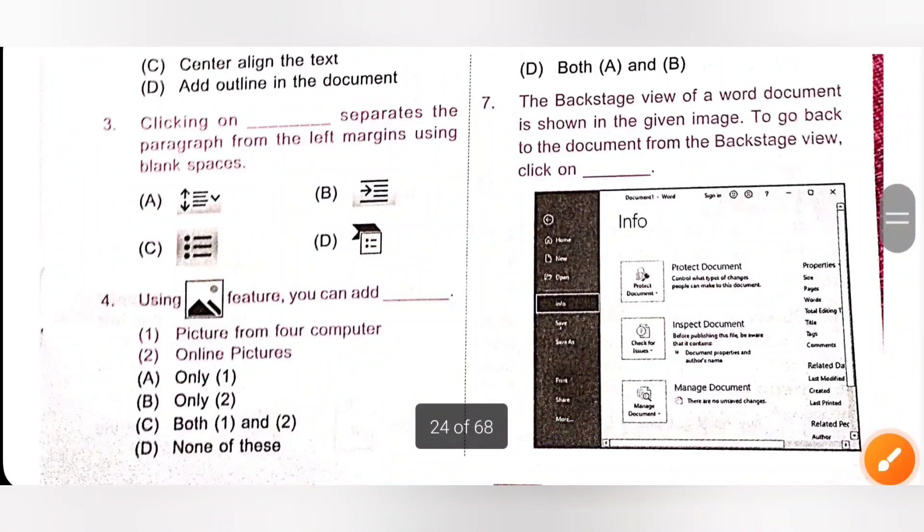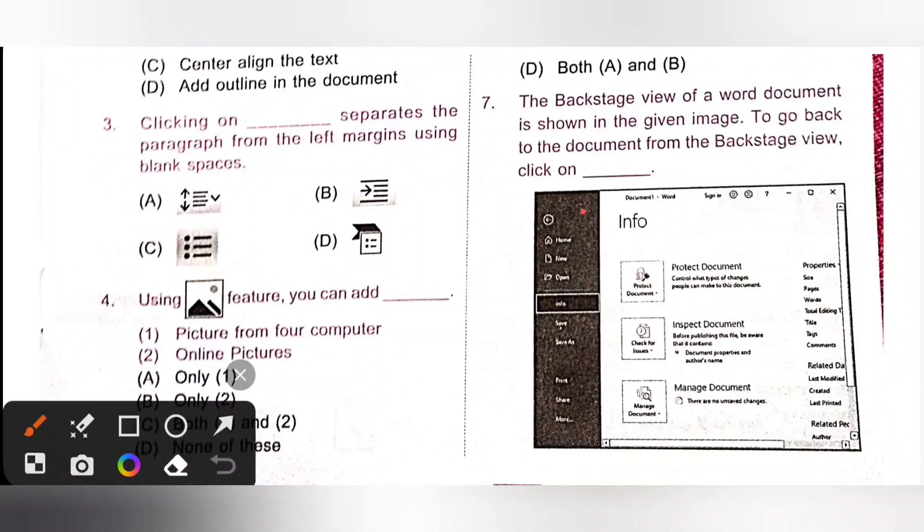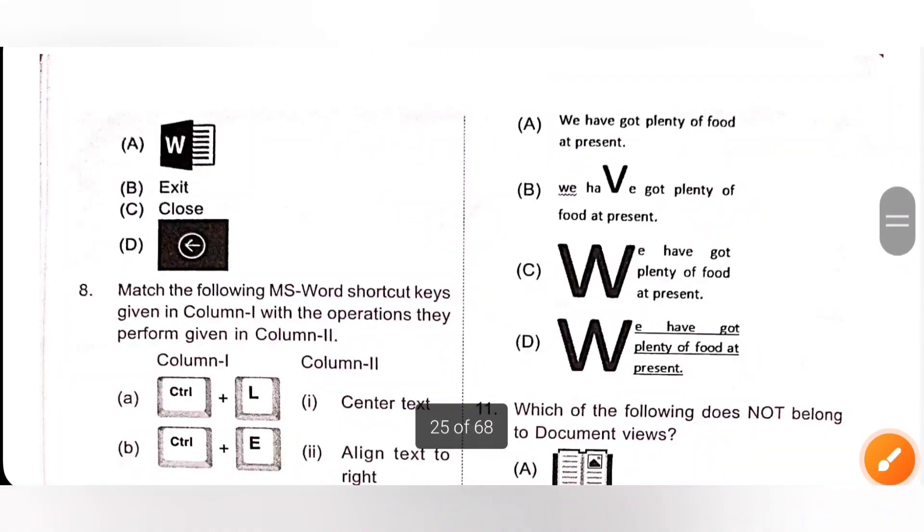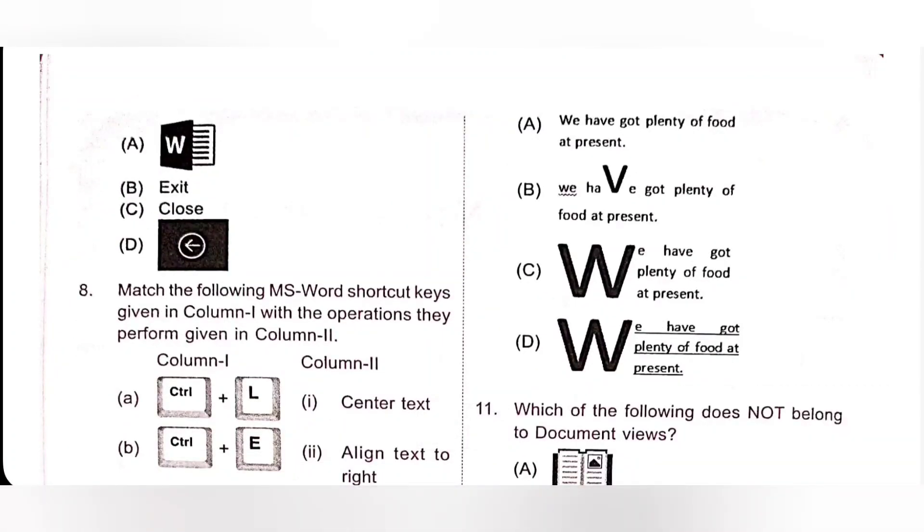Seventh one, the backstage view of a word document is shown in the given image. To go back to the document from the backstage view, click on. So we need to click on back button. Option D. So option D is the correct answer. We need to click on back button.